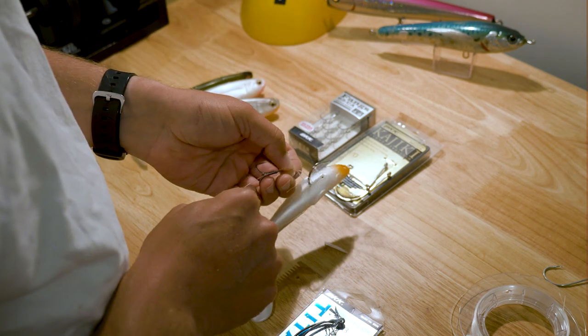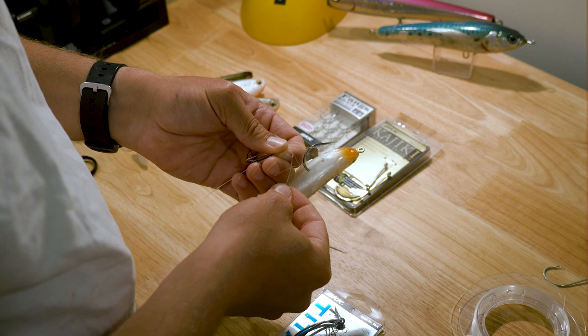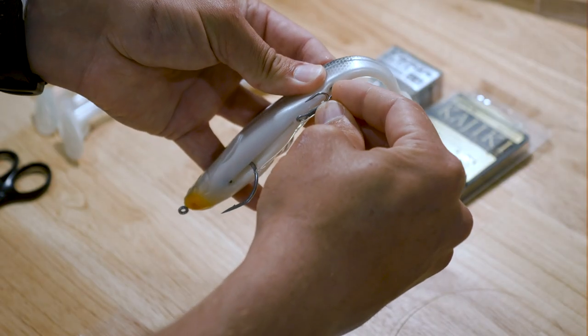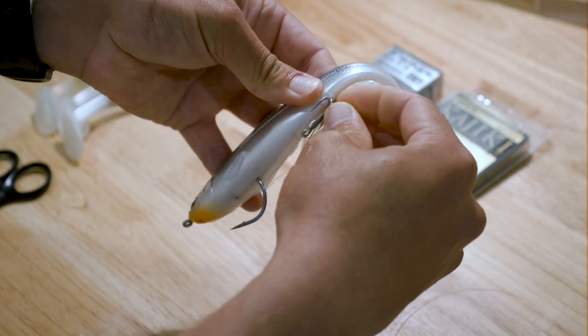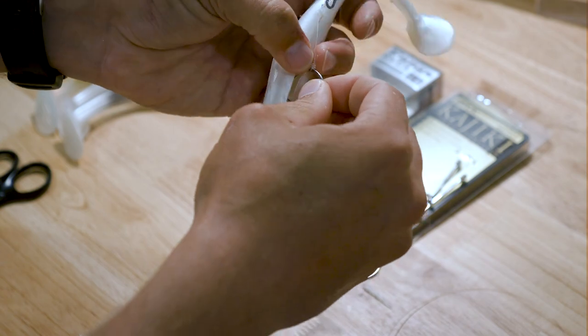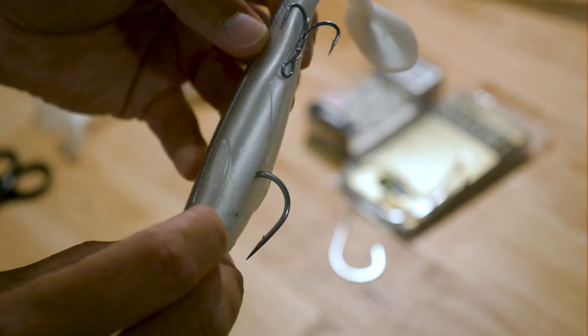This is pretty well the trickiest part just getting this stinger done right. I think this one's looking pretty good so we'll just pin this one in the tail there, just get it nice and straight under the lure and that's pretty well perfect.